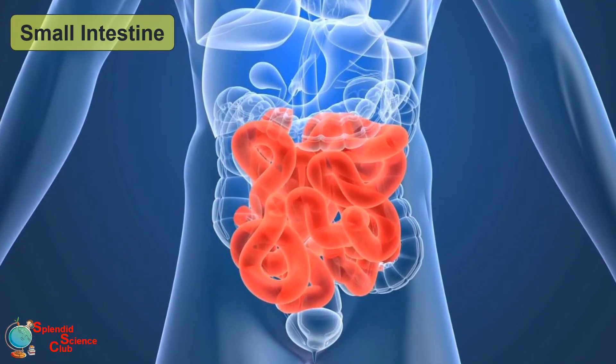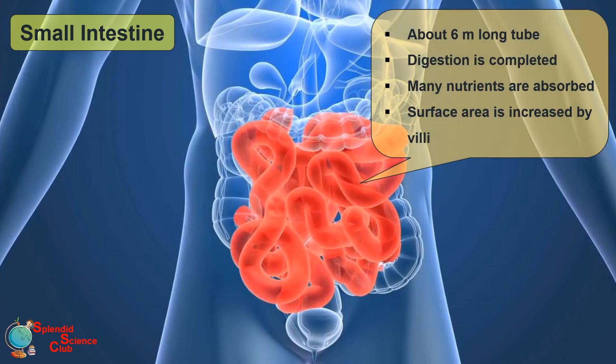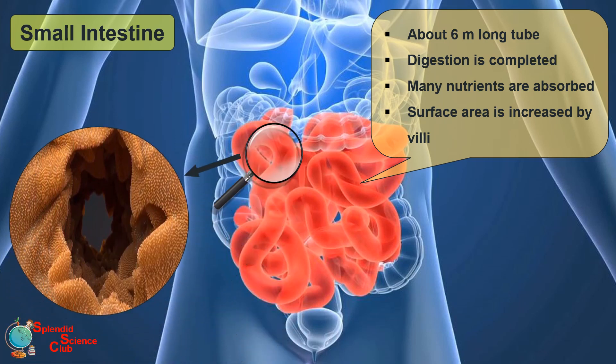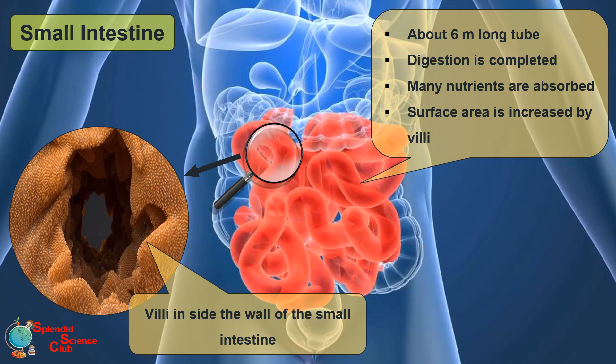The small intestine is the longest tube in the digestive tract, about 6 meters long. Digestion is completed there and many nutrients are absorbed. Finger-like projections called villi have emerged on the upper inner surface of the tube. Villi increase the surface area of the inner layer of the small intestine, making absorption of nutrients more efficient.